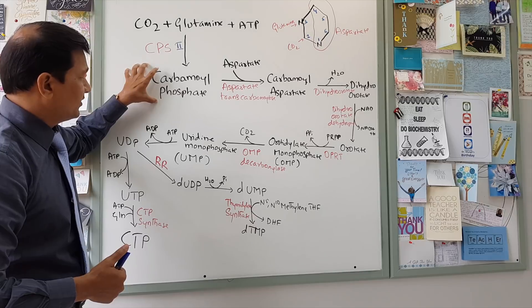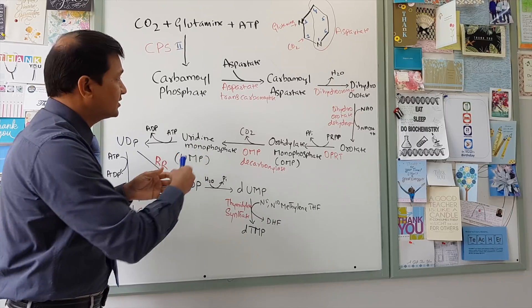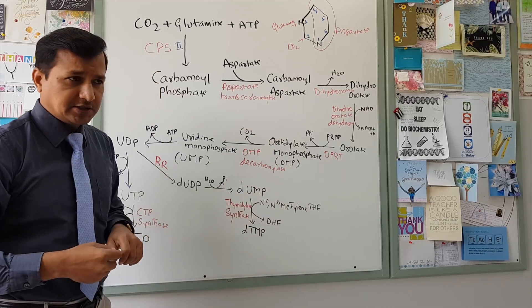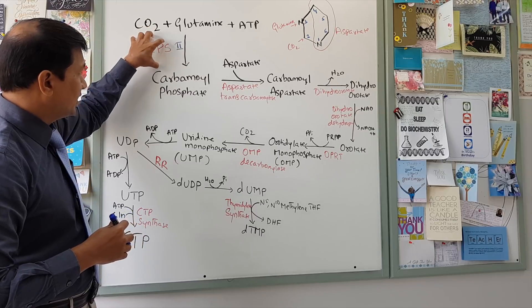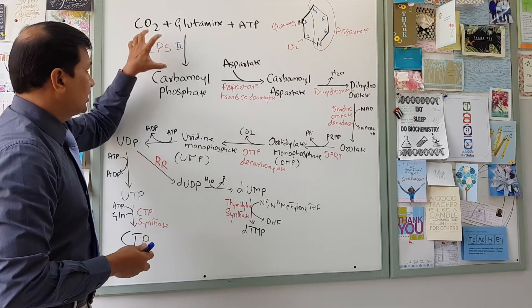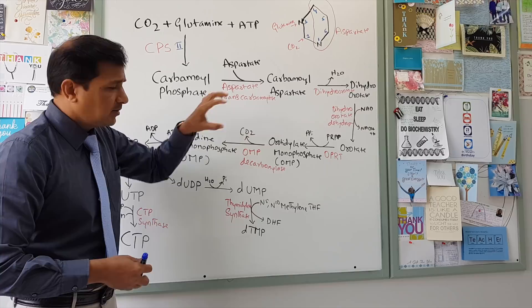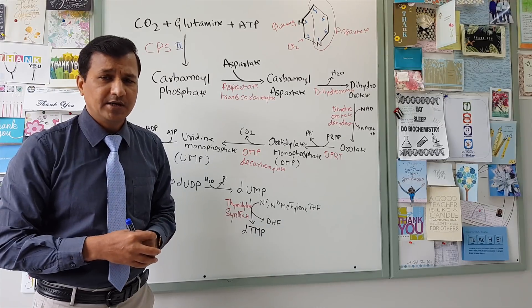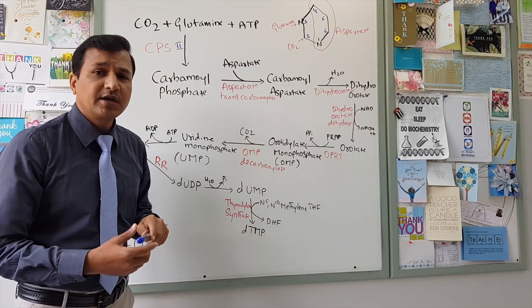Once you get carbamyl phosphate, it condenses with aspartate. The amino acid aspartate condenses with carbamyl phosphate — this job is done by aspartate transcarbamylase enzyme — to give carbamyl aspartate. Now, carbamyl phosphate synthetase 2 is the most highly regulated enzyme in pyrimidine biosynthesis, while aspartate transcarbamylase is considered the committed step or rate-limiting enzyme in pyrimidine biosynthesis.